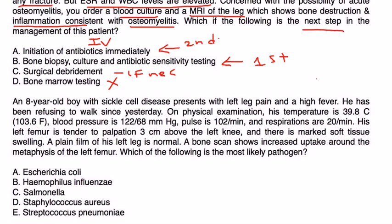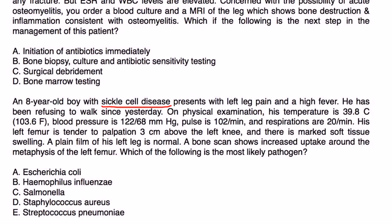Next one. An 8-year-old boy with sickle cell disease presents with left leg pain and high fever. He's been refusing to walk since yesterday. On exam: temperature 103°F, BP 122, pulse 102, respirations 20. Left femur is tender three centimeters above the knee with marked soft tissue swelling. Plain film is normal, but bone scan shows increased uptake around the metaphysis of the left femur. What's the most likely pathogen?